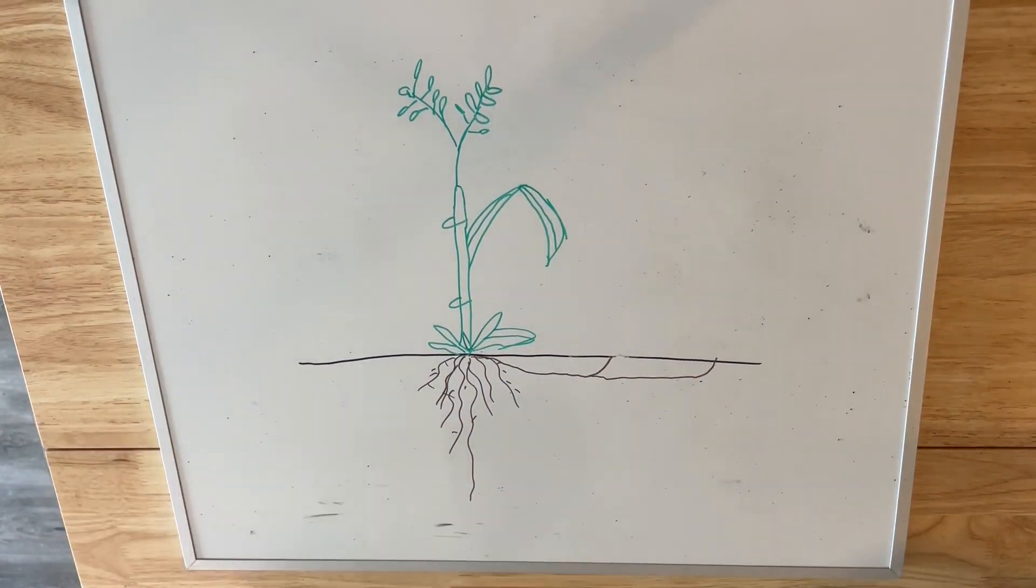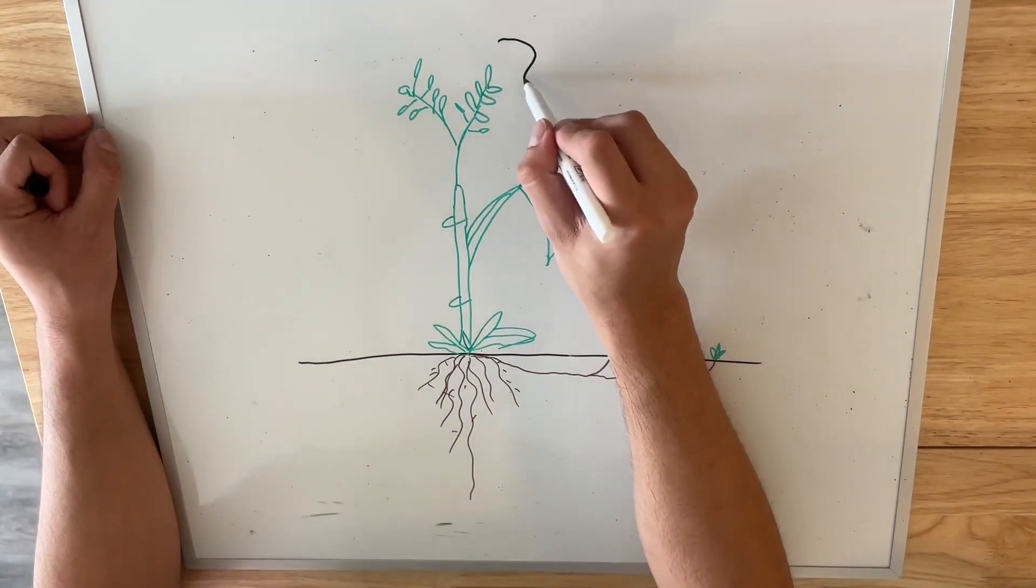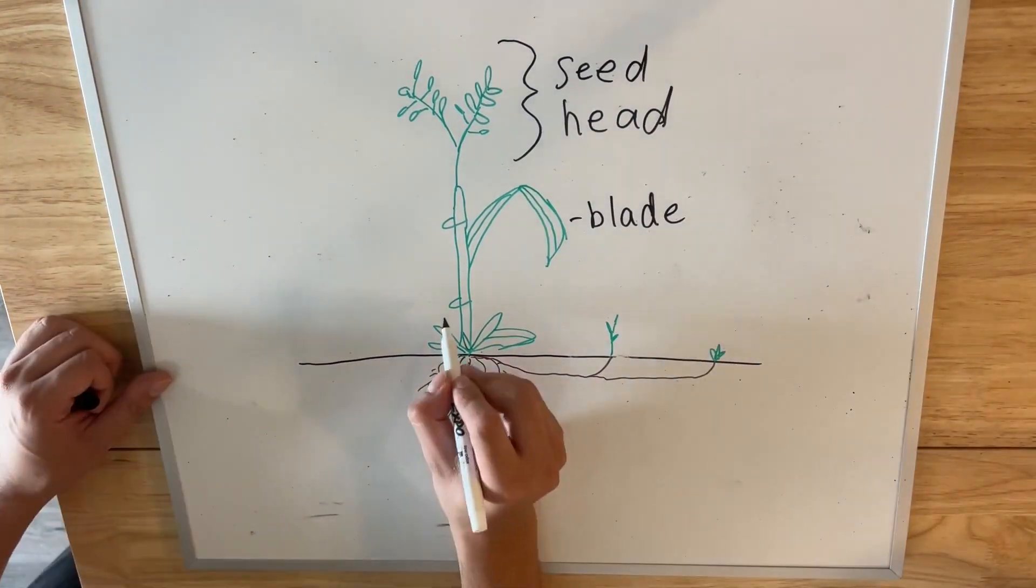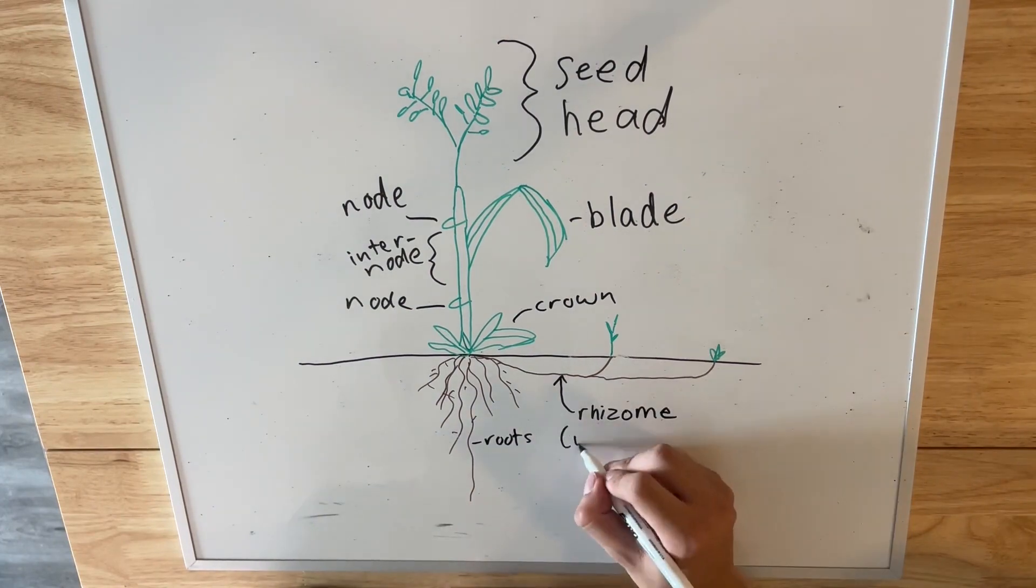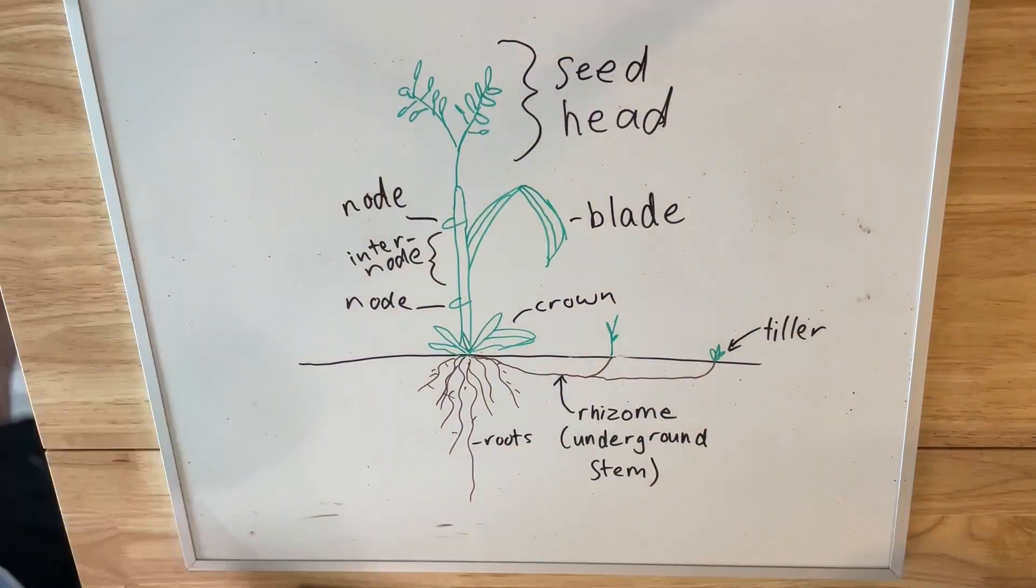Instead, grasses have evolved to be tolerant to grazing, and in some species, mowing causes strong tillering, which is just a fancy grass term for spreading. And you can see here that the rhizomes will turn to tillers.